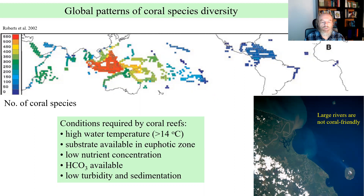They also need to be in the euphotic zone because their mutualistic dinoflagellates are photosynthesizing. They need to be in areas with low nutrient concentration; otherwise their competitors, especially algae, will overgrow them. And they need to be in areas of low turbidity and sedimentation, otherwise they will be buried in the sediment because they grow slowly and it's easy for them to be covered by fast-growing sediment layers.